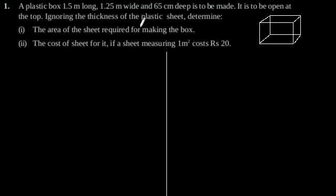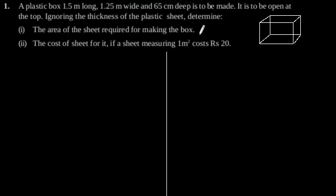Exercise 13.1, Question number 1. A plastic box 1.5 meter long, 1.25 meter wide, and 65 centimeter deep is to be made. It is to be opened at the top. Ignore the thickness of the plastic sheet. Determine first the area of the sheet required for making the box.